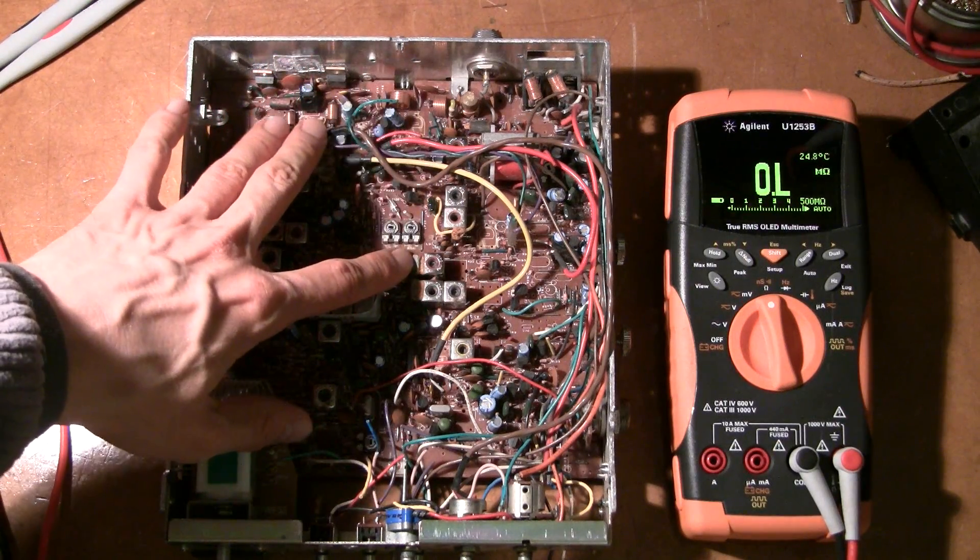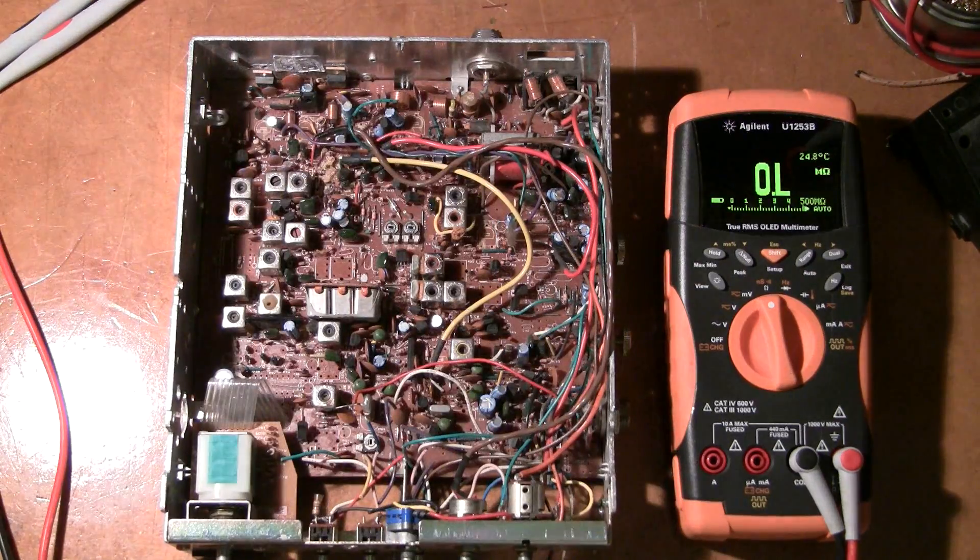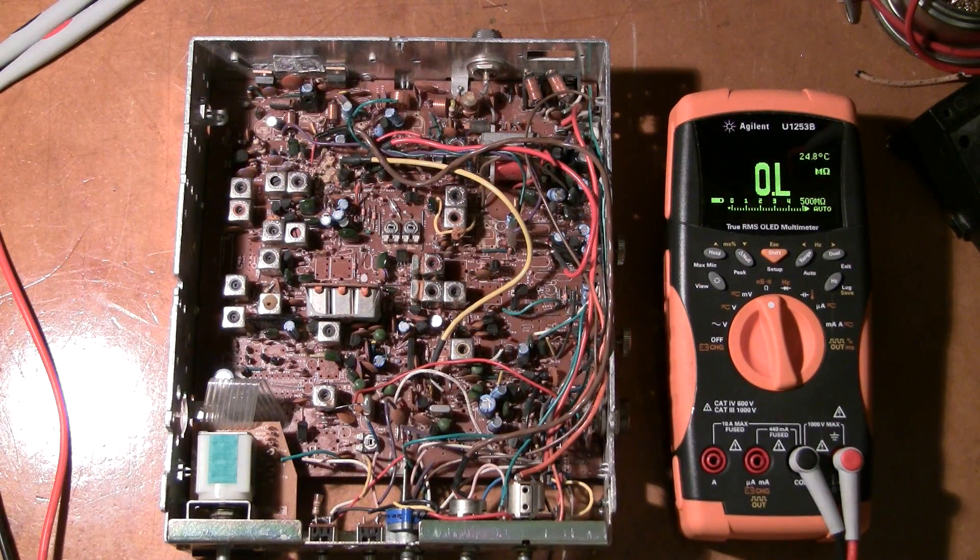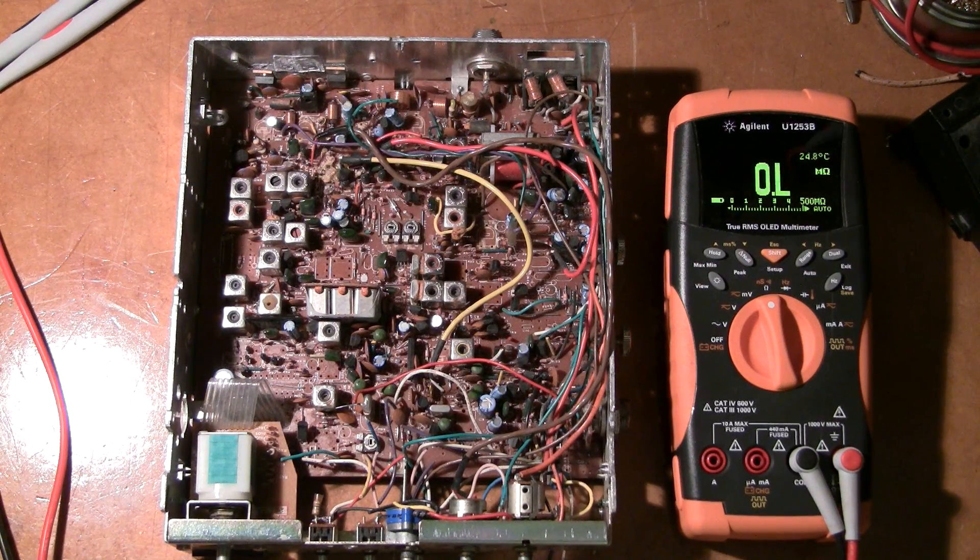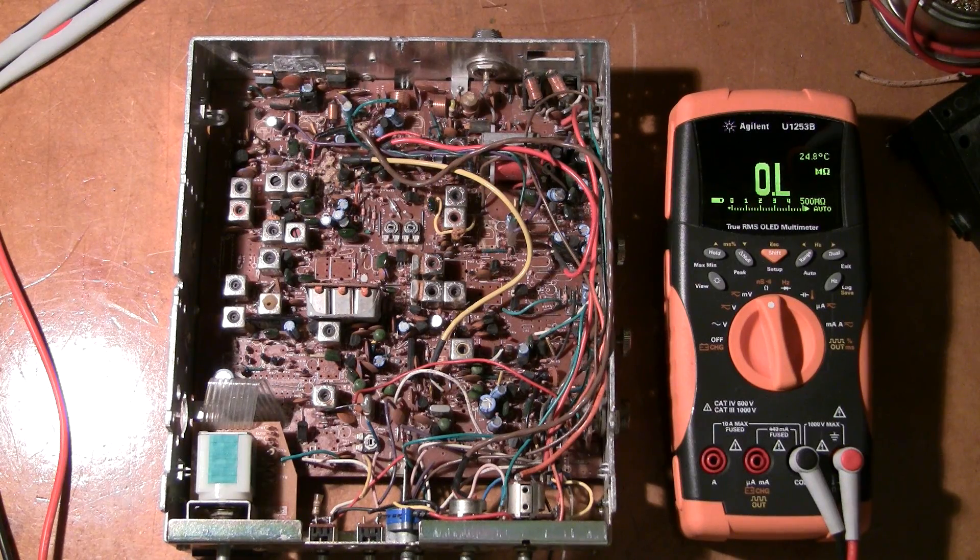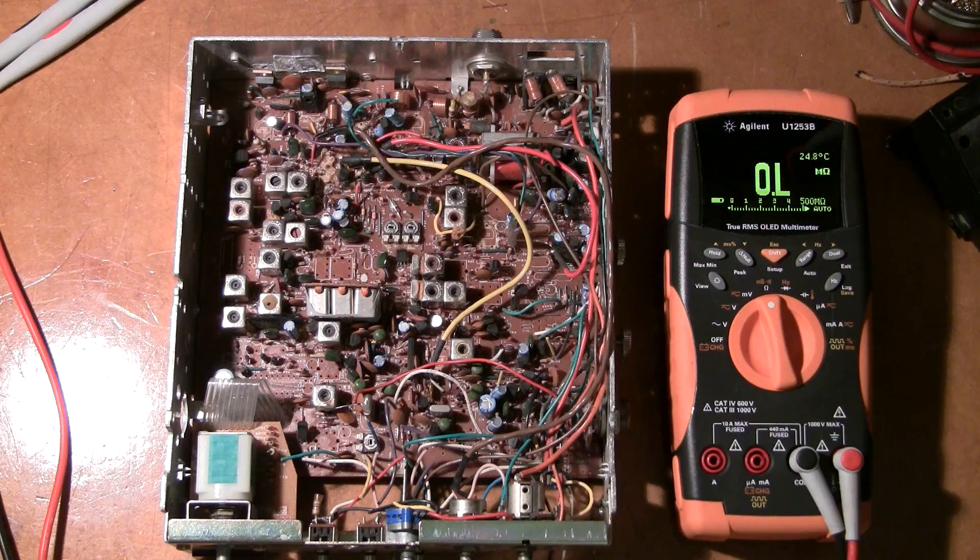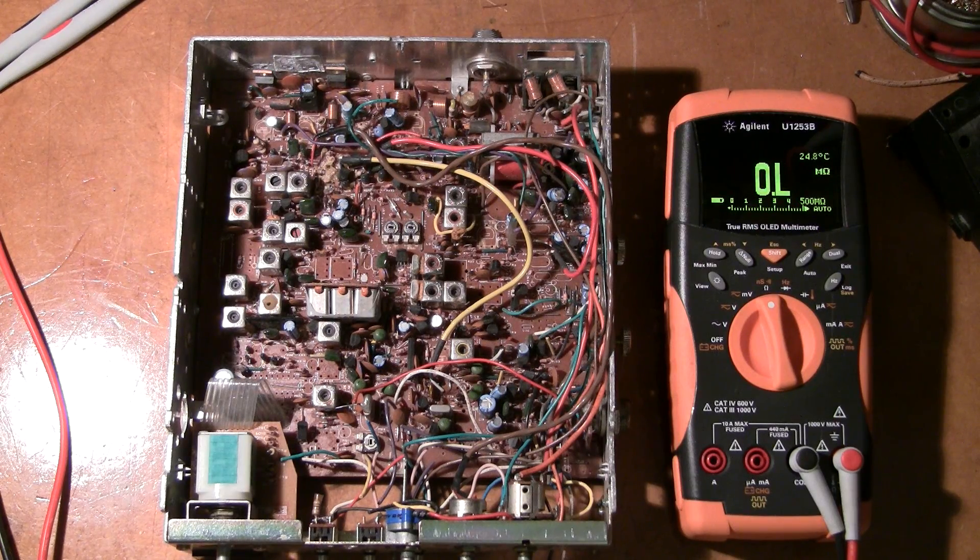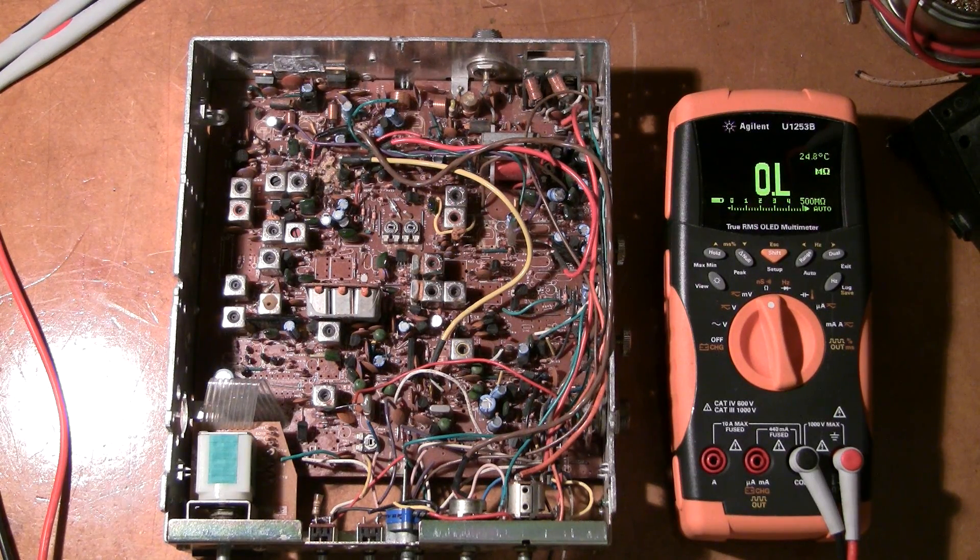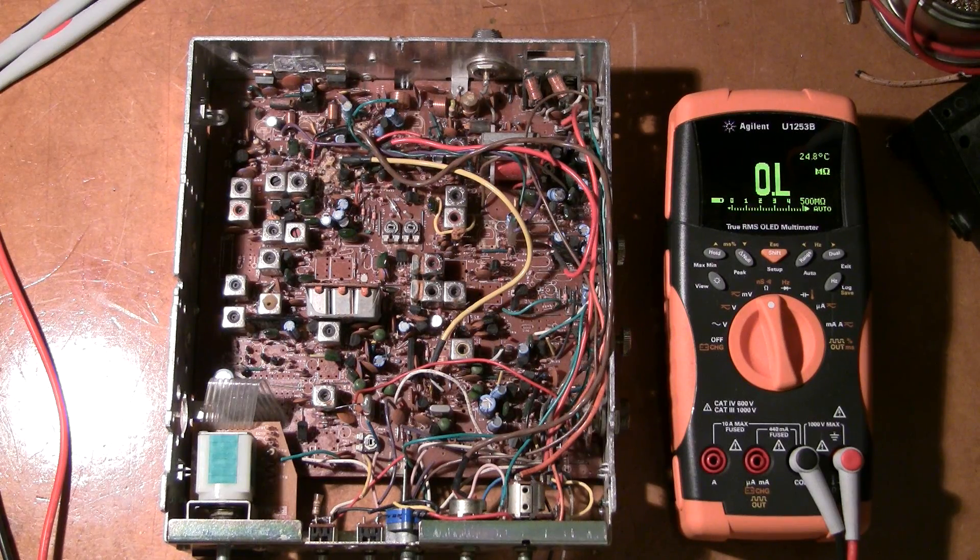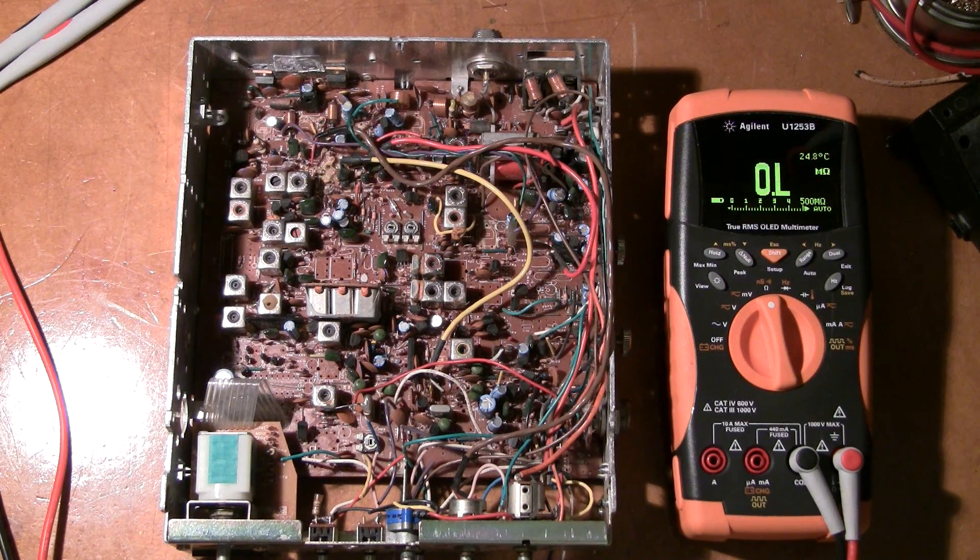But the bottom line here is if you find this glue in anything, you want to get rid of it. You'll find it in monitors. It's really prevalent in monitors and it's almost like it was planned. I'd like to think that the manufacturers didn't know about this glue going conductive, but it seems to be so prevalent in high voltage circuits, it almost looks like it was put there purposely.